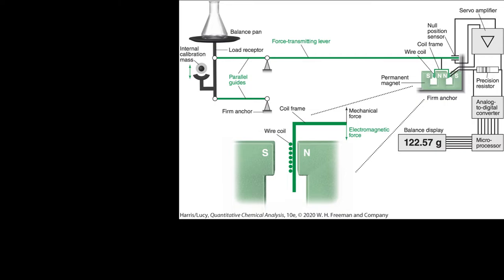And so as soon as this changes, it basically sends a signal to this servo amplifier that passes a current through this electromagnet to essentially pull the beam back down again to oppose the weight of the object you've put on the balance pan.